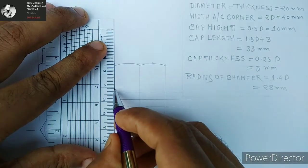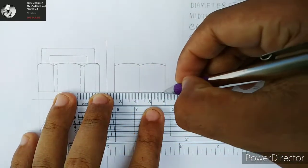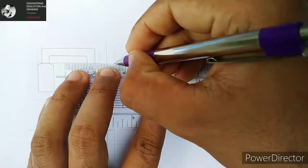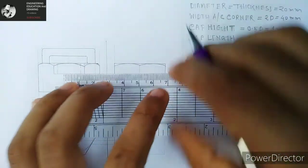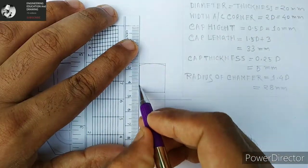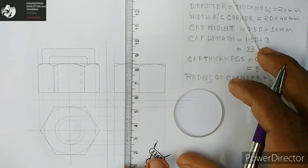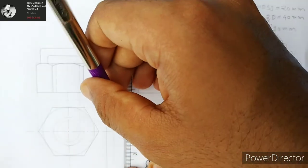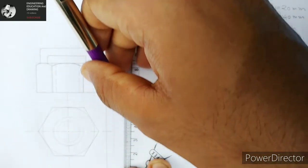Now we are making by taking the same 28 millimeter radius and making the chamfering. Now we are highlighting the border lines. Here also we have four hidden lines for the thread, for the empty space in the top view.